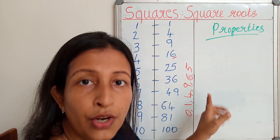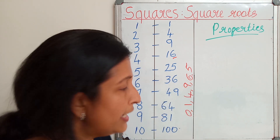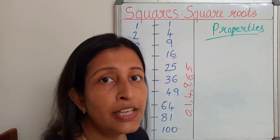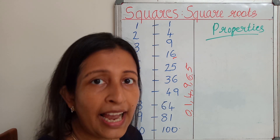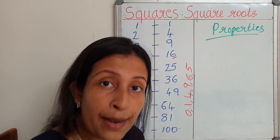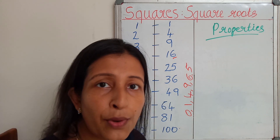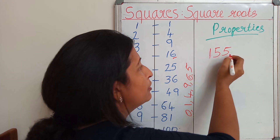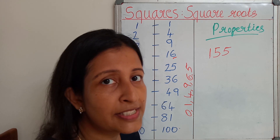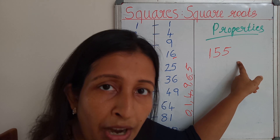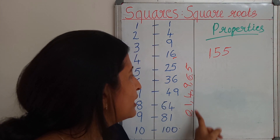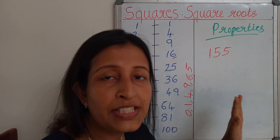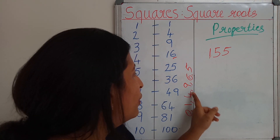So all square numbers should have a last digit of 0, 1, 4, 5, 6, or 9. But can we say that all numbers ending with these digits are perfect squares? No — for example, 55 ends with 5 but it is not a perfect square. So we cannot say that a number ending with 0, 1, 4, 5, 6, or 9 is definitely a perfect square. But if a number is a perfect square, it must end with one of these digits: 0, 1, 4, 5, 6, or 9.